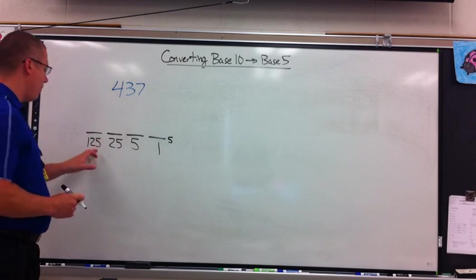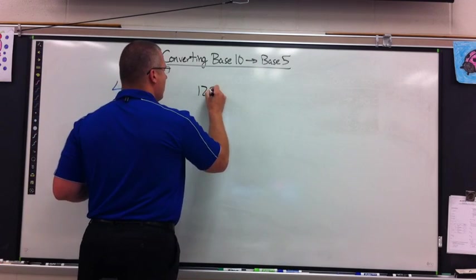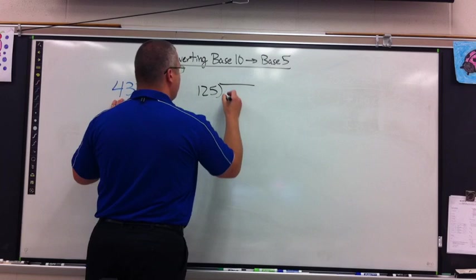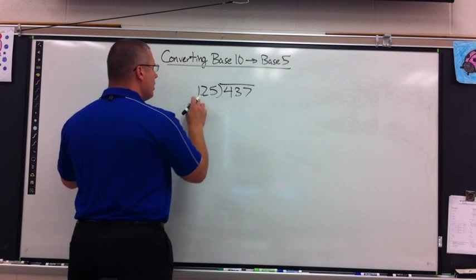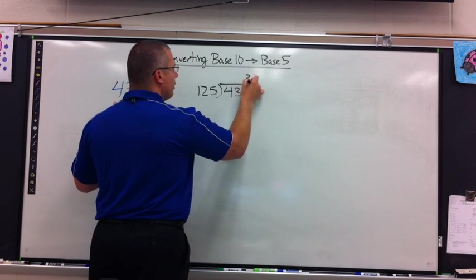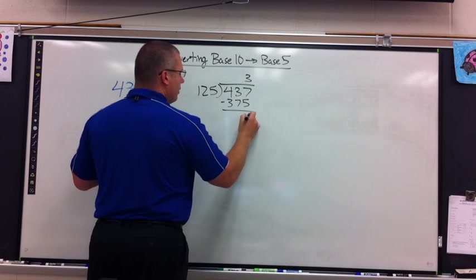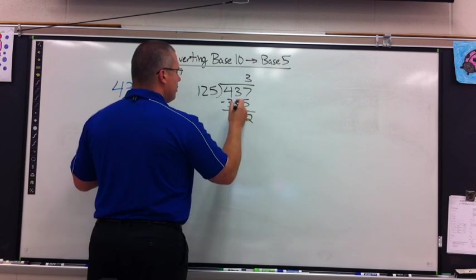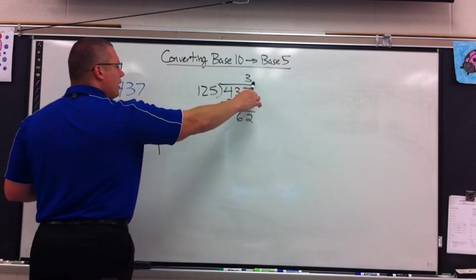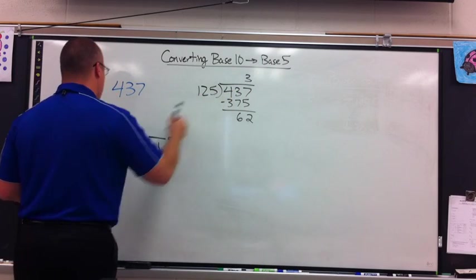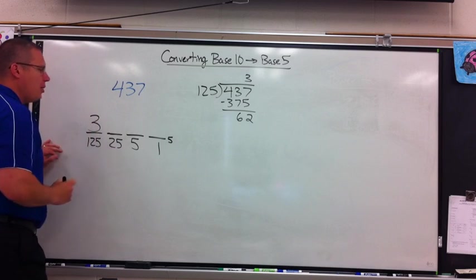So what we're going to do is split this number up — I need division. I'm going to take 125 on the outside because I want to know how many 125s fit into 437. That should be 3, which gives us 375. So this 3 is how many 125s I need. I go back down to my 125 column and put a 3 there.